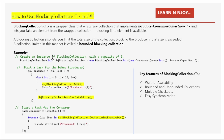First of all, we need to create an instance of the BlockingCollection<T>. I have mentioned a capacity of five. The statement reads: BlockingCollection<int> objBlockingCollection = new BlockingCollection<int>(new ConcurrentQueue<int>(), boundedCapacity: 5).